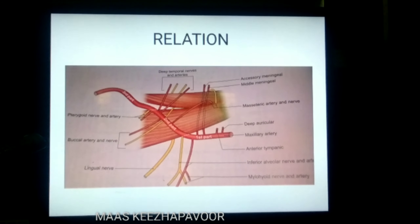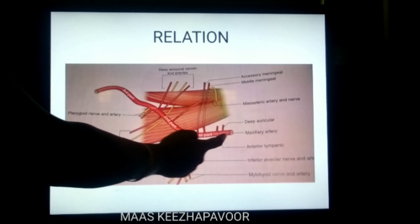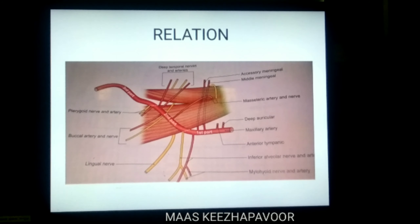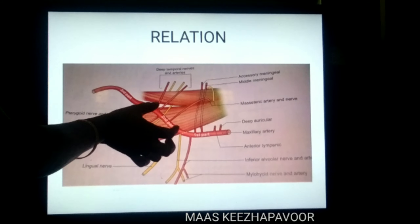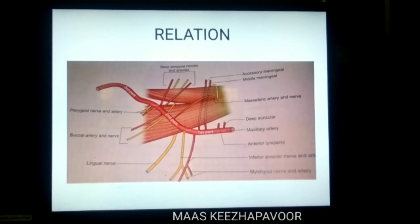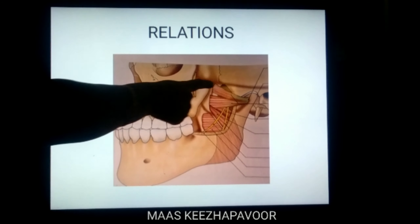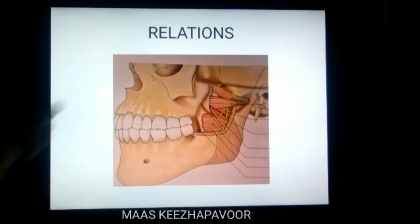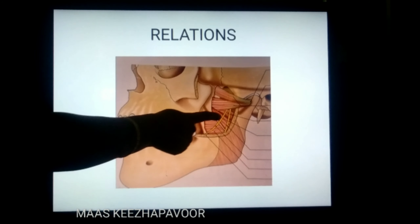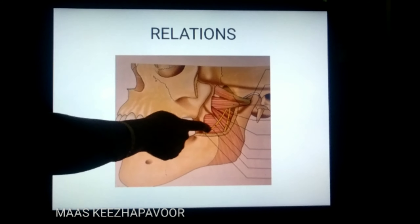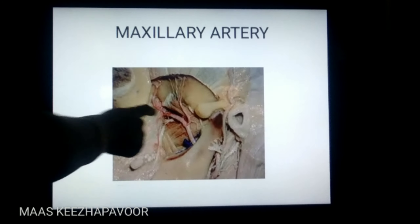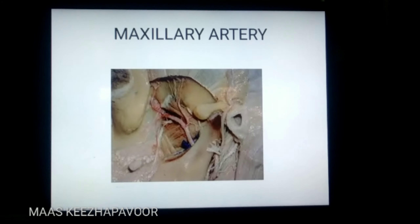Observe the maxillary artery — it has got three parts. The first part of the maxillary artery arises from the external carotid artery until the artery reaches the lower border of the lower head of the lateral pterygoid muscle. When the artery lies over the lower head, it is the second part. The third part of the maxillary artery dips between the two heads of the lateral pterygoid muscle. You can observe the two heads of lateral pterygoid taking origin from the infratemporal surface and crest of the greater wing, and the lateral surface of the lateral pterygoid plate, with insertion to the pterygoid fovea. The lingual nerve emerges anteriorly and the inferior alveolar nerve posteriorly from the lower border. You can see the maxillary artery dipping between the two heads of lateral pterygoid muscle.